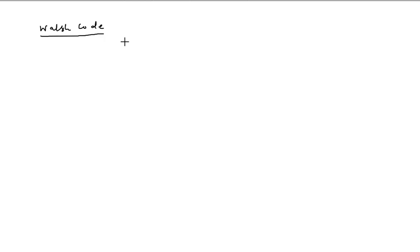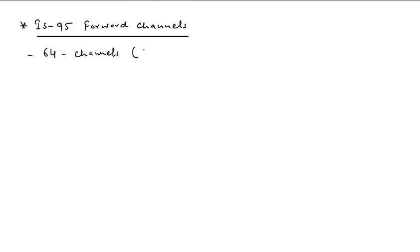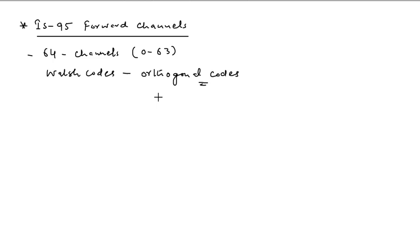Walsh codes are the backbone of CDMA-based systems and are used to develop individual channels. In IS95 forward channels, there are around 64 channels — from channel 0 to 63. These channels are logically separated from one another using the CDMA spreading code, known as Walsh functions or Walsh codes, which are also called orthogonal codes.